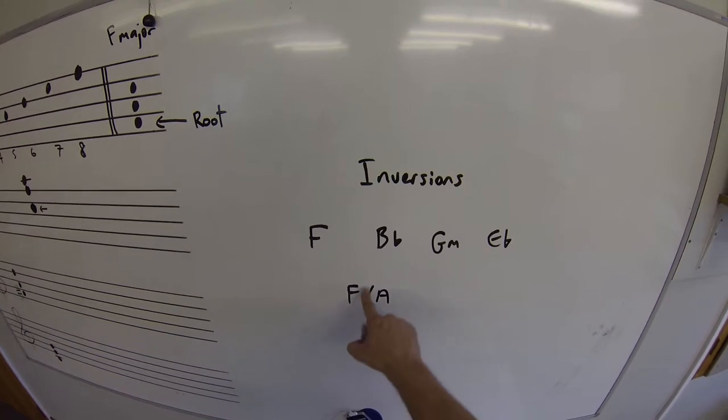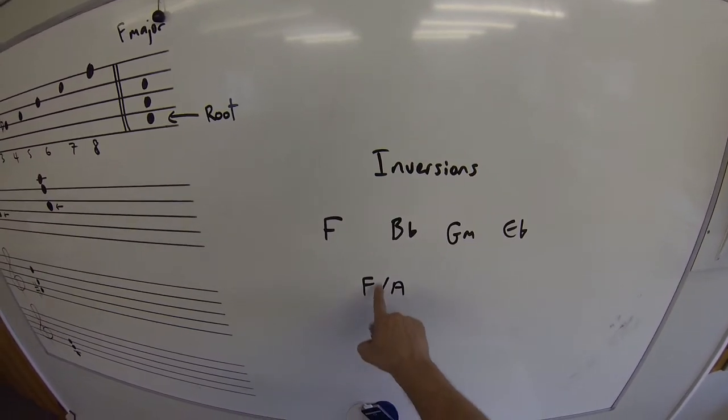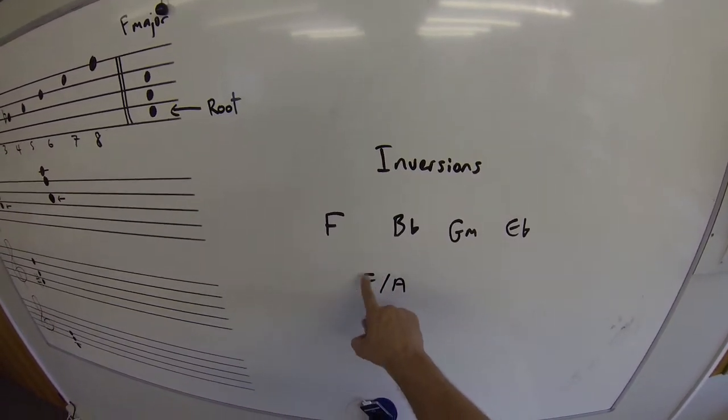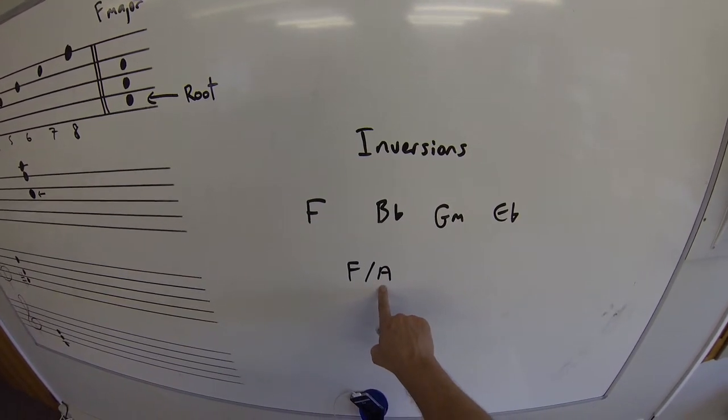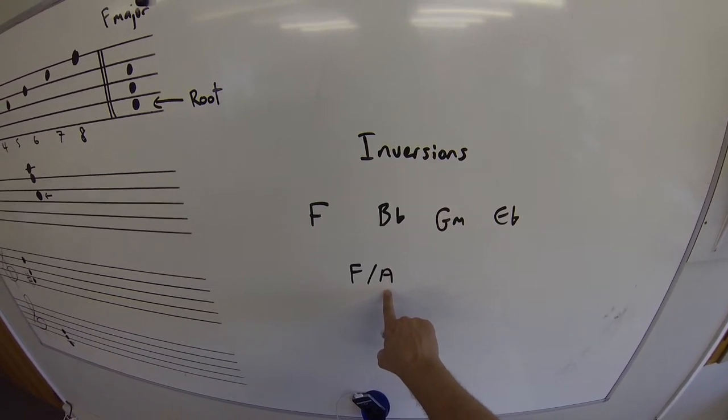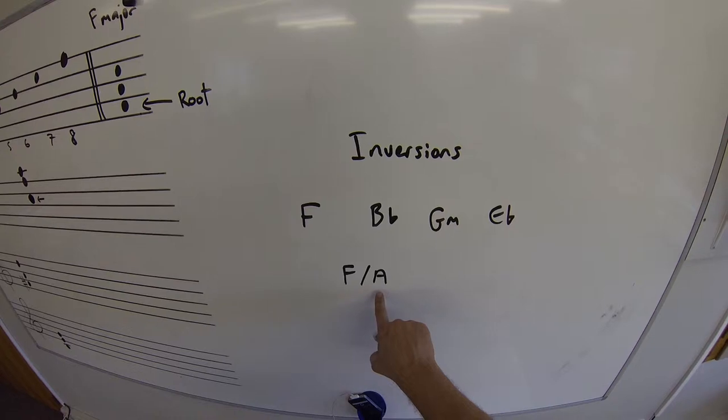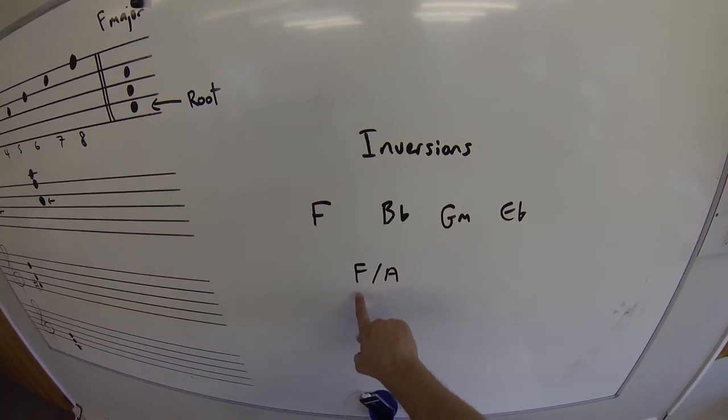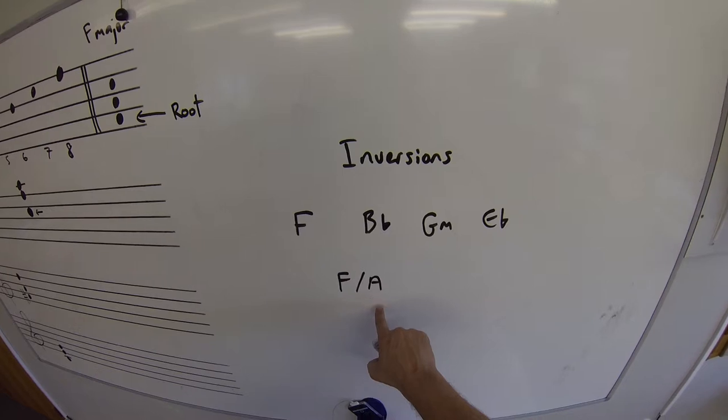You might have seen a forward slash used. What that means is the band is playing a combination of F major triad notes, but the bass notes, particularly the bass guitar and the left hand if there's a keyboard player, will be playing an A, and that makes the chord of F major over A.